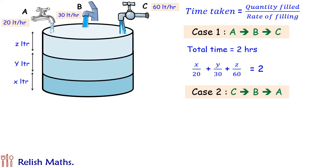In case 2, tap C was used first and total time taken was 3 hours. So calculating the time in the same way, tap C was used first and thus time taken by tap C was X upon 60, and in the same way by tap B and tap A was Y upon 30 plus Z upon 20, and this total time equals 3.